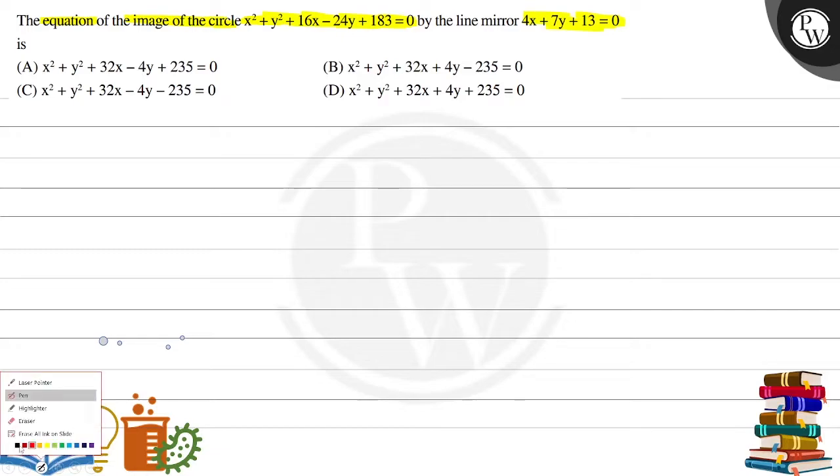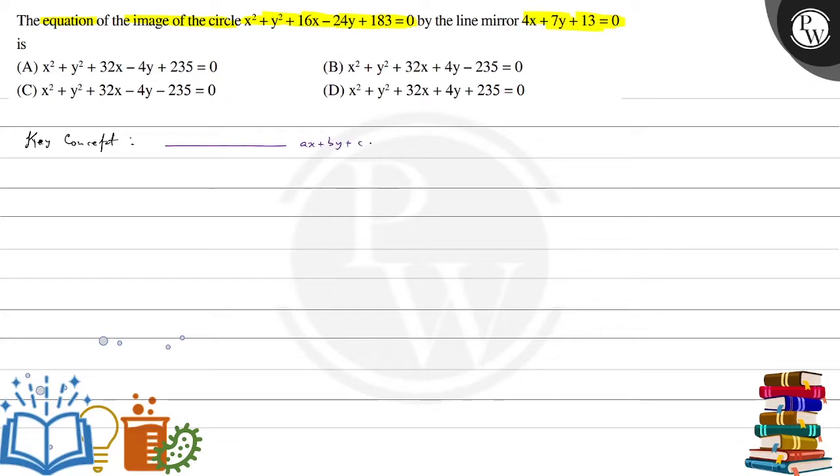So, this problem to solve the problem, what concept of the image of a point about a straight line. So, it is very simple. If you have a straight line, which is the equation is ax plus by plus c equal to 0.